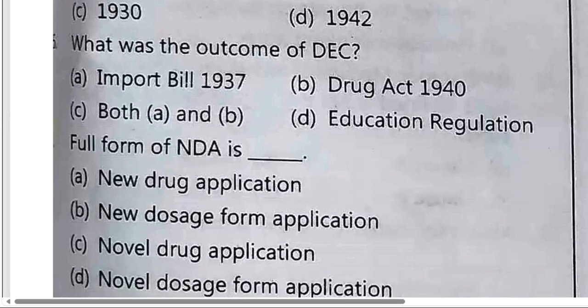What was the outcome of DEC? The options include Imported Bill 1937 and Drug Guide 1940. Option C: Both A and B.